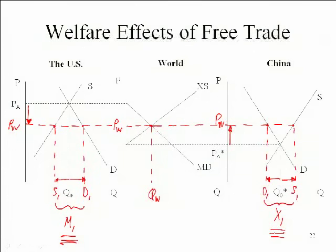That difference would have to be the same — the imports in the US would equal the exports in China. This is only true in a two-country model, but that works just fine for us. Now we want to think about what were the welfare effects in both the US and China from going from an autarky situation to a free trade situation.